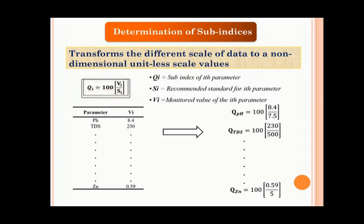To calculate the sub-indices, we have used the formula QI is equal to 100 into VI divided by SI, where QI is the sub-index of the ith parameter, SI is the recommended standard for the ith parameter, and VI is the monitored or measured value of the ith parameter. We can see from the table that the measured value of TDS is given as 230 mg per litre, and from previous slide, we have seen that the recommended standard for TDS was given as 500 mg per litre. Therefore, QTDS equals 100 into 230 divided by 500. Since the measured value and the standard value of a particular parameter will have the same unit, dividing them makes the resultant value unitless and comparable across different parameters.